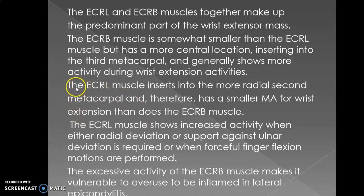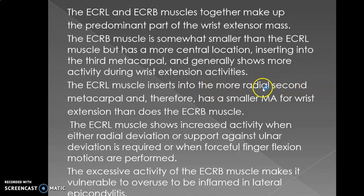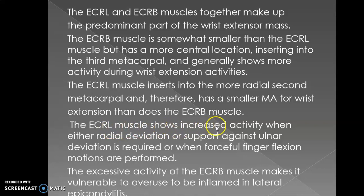The ECRL, that is extensor carpi radialis longus muscle, inserts into the more radial second metacarpal. Compared to the ECRB, it is more on the radial side, therefore it has a smaller moment arm for wrist extension than does the ECRB, that is the extensor carpi radialis brevis. The extensor carpi radialis longus shows increased activity when either radial deviation or support against ulnar deviation is required.